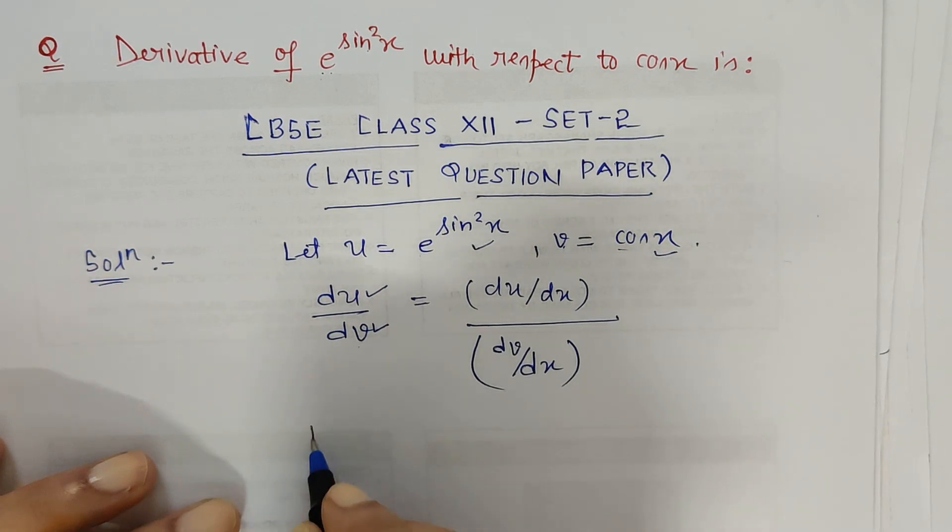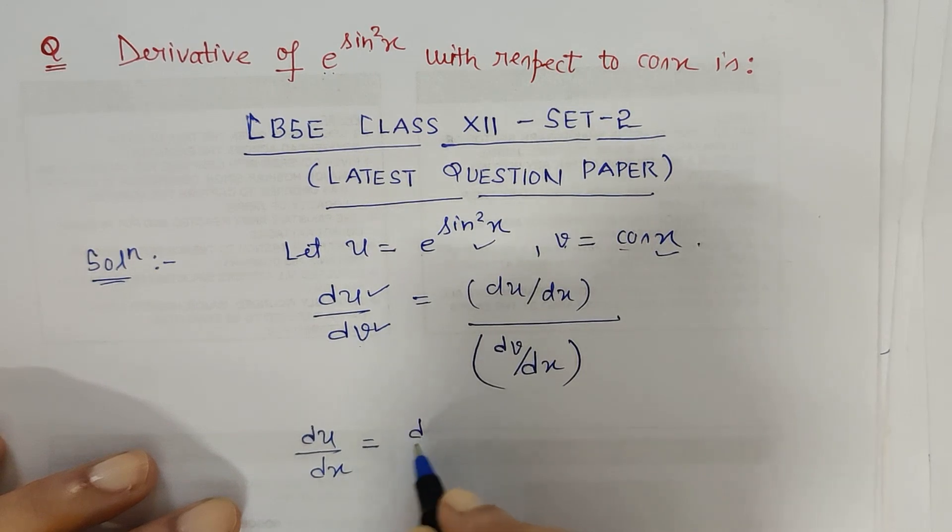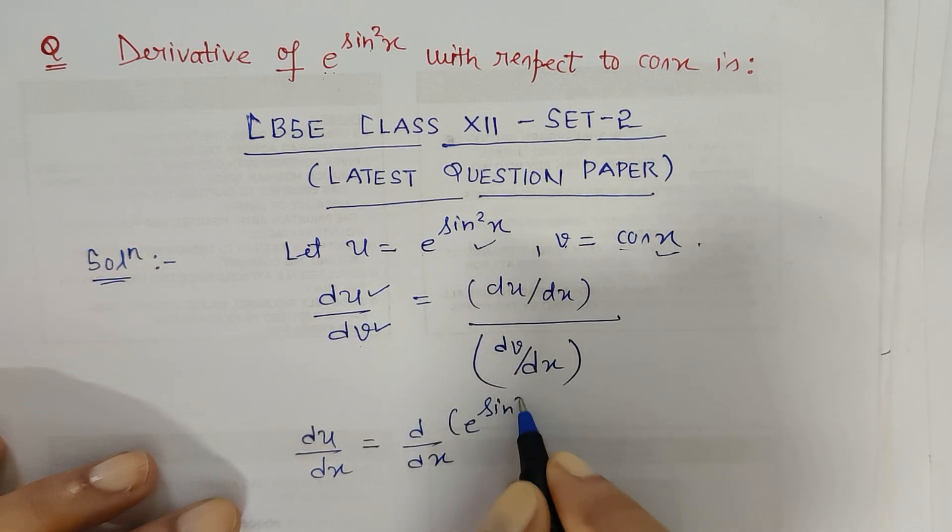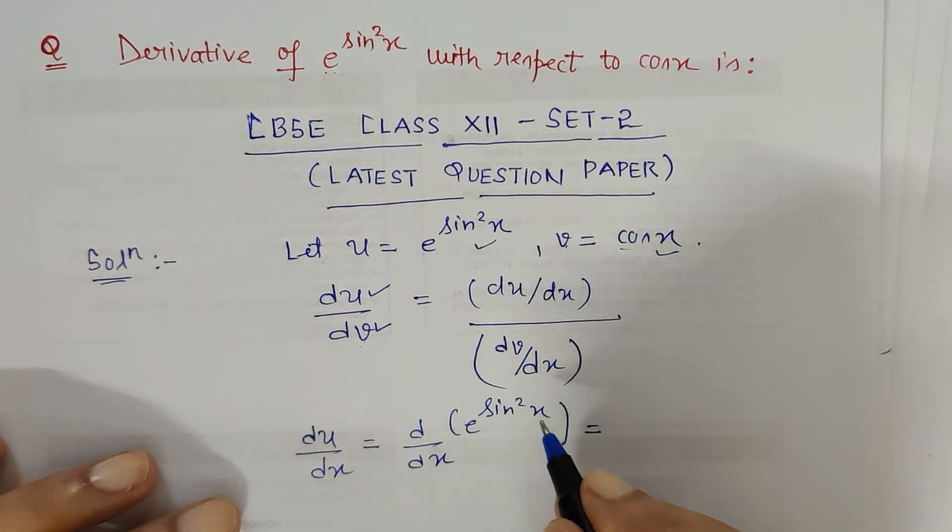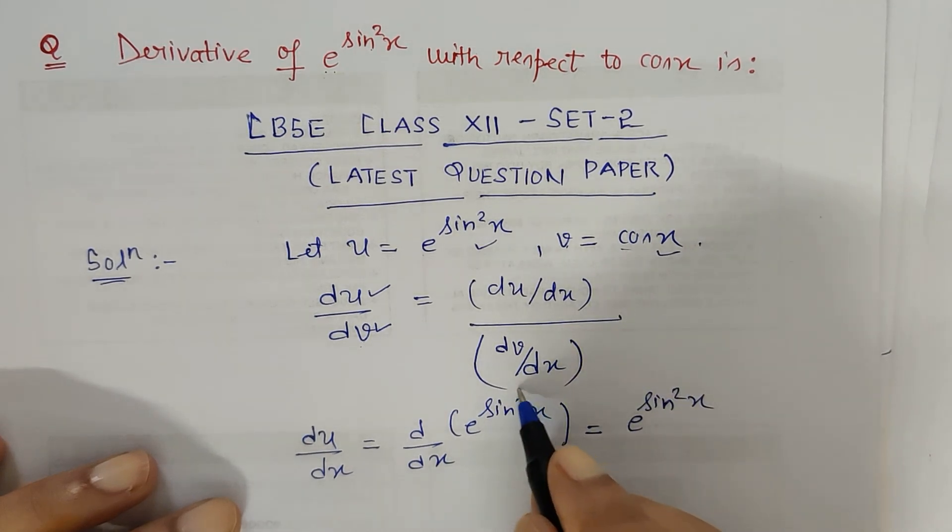So here if I find du by dx separately, what does it mean? It means that we are differentiating with respect to x: e to the power sin squared x. So e to the power x is nothing but e to the power x only. So I will write e to the power sin squared x only.